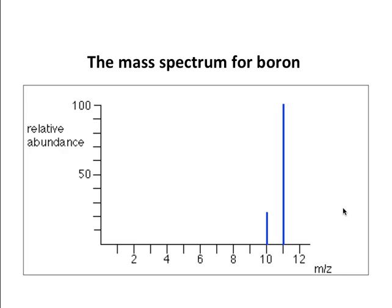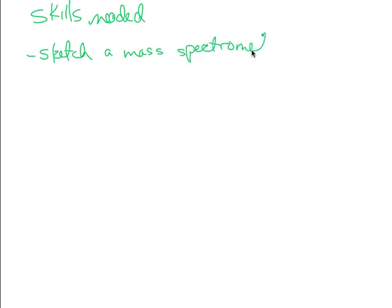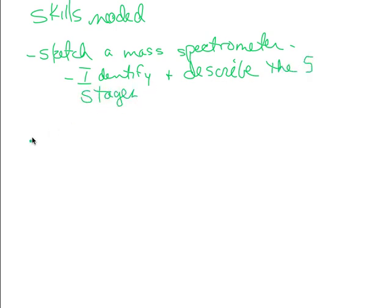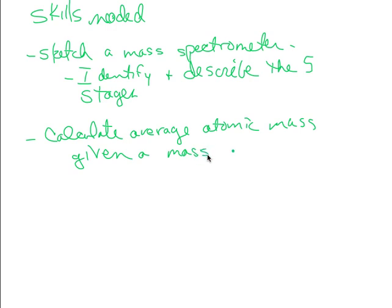This is what it would look like for boron, zirconium, you can see the difference. So to recap, skills you will need: be able to sketch a mass spectrometer, identify and describe the five stages, and make sure that you can calculate average atomic mass given a mass spectrum.